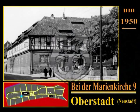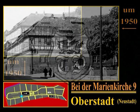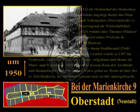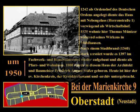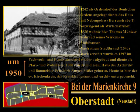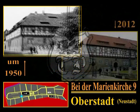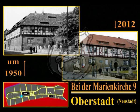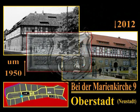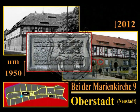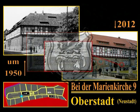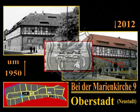Nach diesem kurzen Ausflug in die Wahlstraße sind wir wieder zurück bei der Marienkirche, beim Haus Nummer 9. 1242 als Ordenshof des Deutschen Ordens angelegt, diente das Haus mit Nebengelass in der Herrenstraße 1 vorwiegend als Wirtschaftshof; 1525 wohnte hier Thomas Münzer während seines Wirkens in Mühlhausen. Nach einem Stadtbrand im Jahre 1340 stark zerstört, wurde es 1397 im Fachwerk- und Renaissancestil wieder aufgebaut und diente als Fahr- und Wohnhaus. Im Jahr 1800 wurde in diesem Haus der Architekt und Baumeister Friedrich August Stühler geboren; heute ist hier der Evangelische Kirchenkreis, das Kirchenamt und das Kirchenarchiv untergebracht.